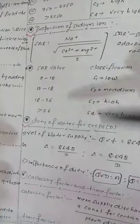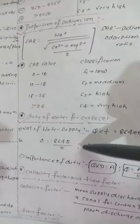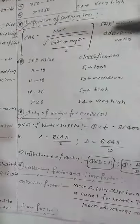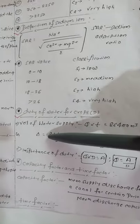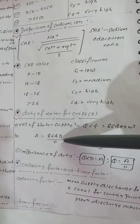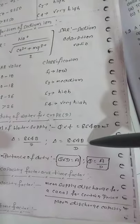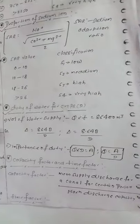Next is the formula for duty of water for crops. This is very important - every year this type of problem comes. Remember: delta equals 8.64 B/D. You have to remember this conversion.